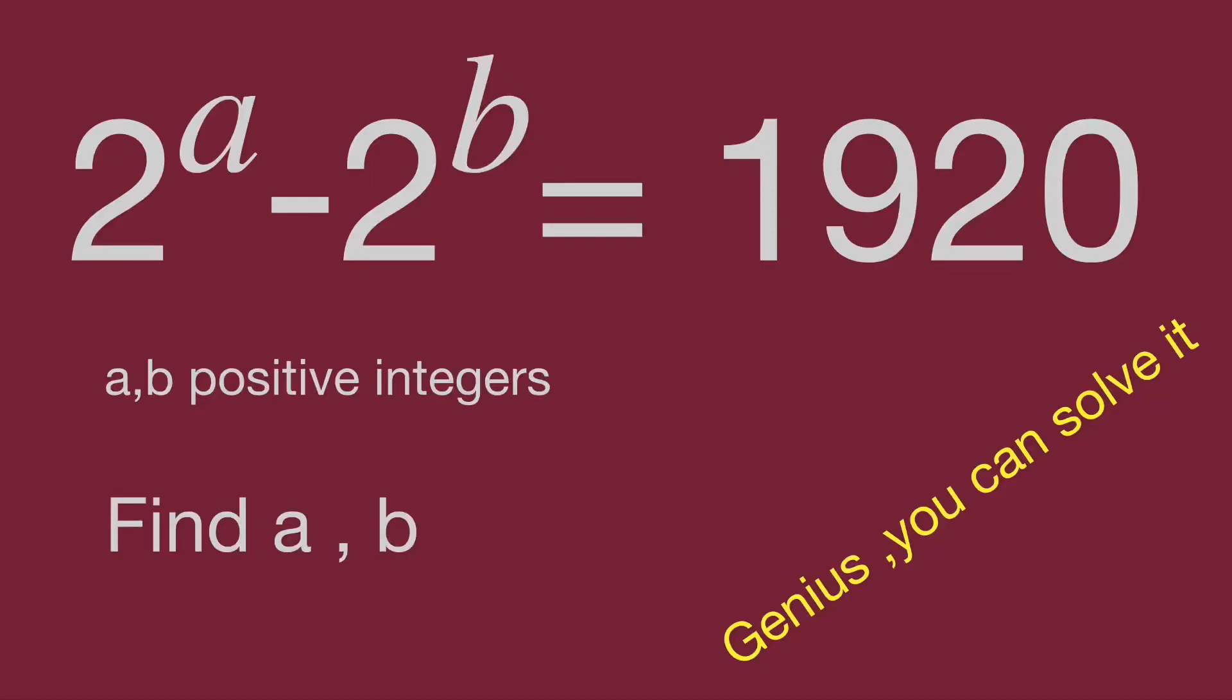Hello, you are watching Balahippo Math Genius Riddle. The question is 2 power a minus 2 power b equals 1920, and a and b are positive integers. Find the value for a and b.